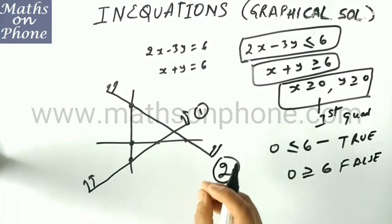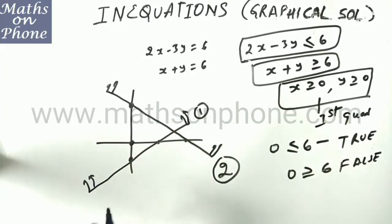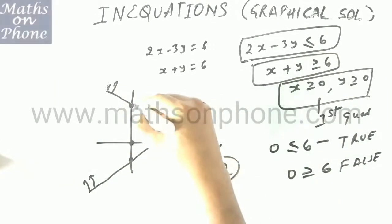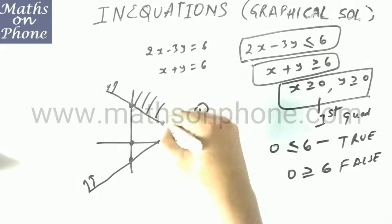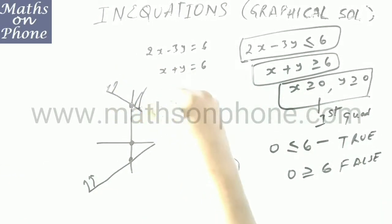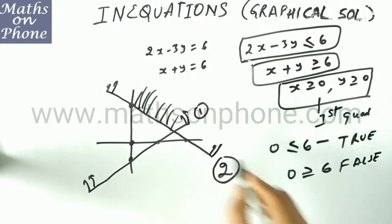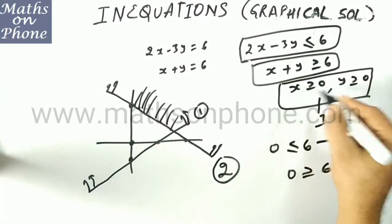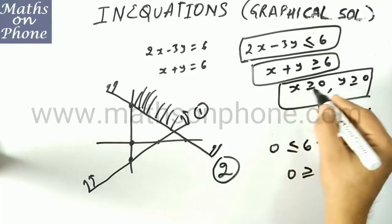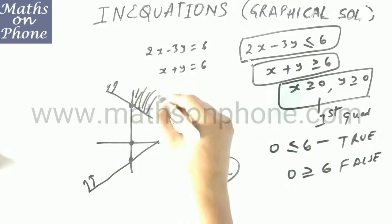Now we need to shade the region satisfying both conditions. The common region will be this — but not here, and we won't go here either. Why? Because it is mentioned that x and y should be greater than 0, meaning we stay in the first quadrant. Shade the region accordingly. This is the graphical solution of the two inequations.